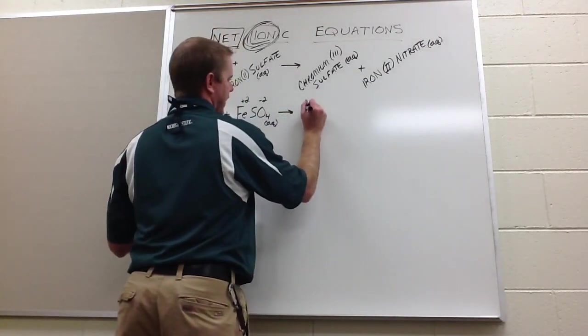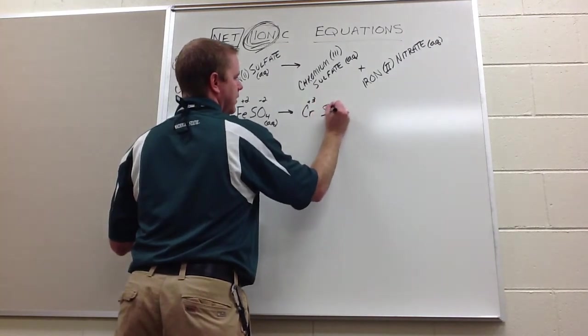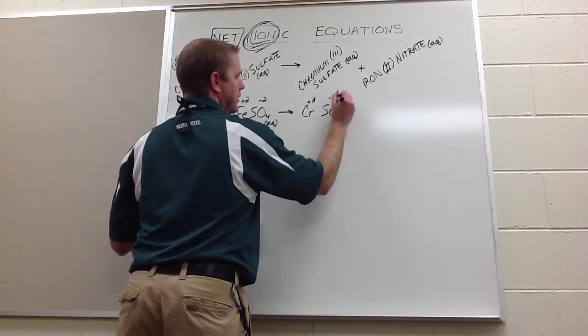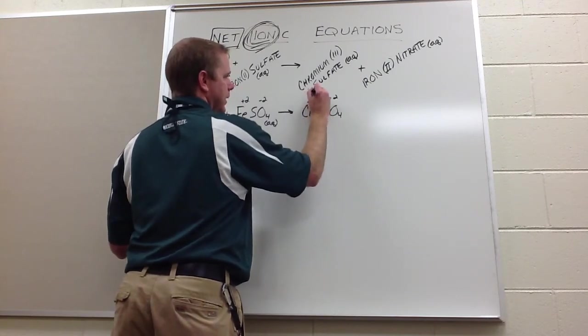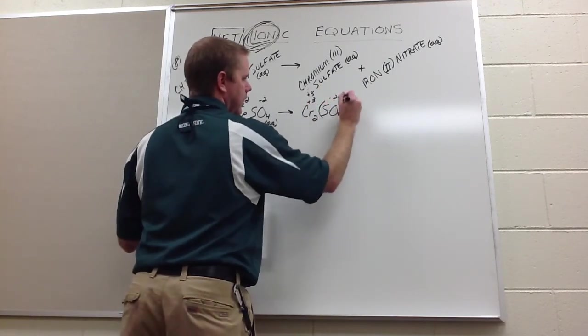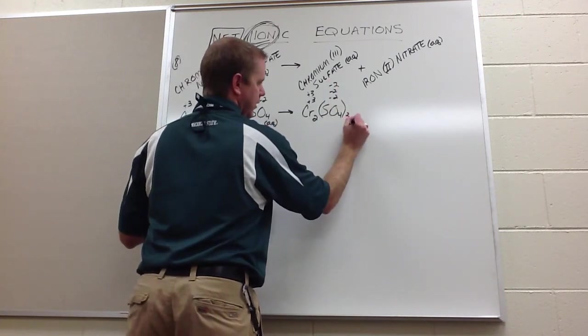Then chromium three sulfate, so we have Cr, it's plus three. Sulfate is SO4, it's still minus two. Therefore, it would take two positive three chromiums and three negative two sulfates. And it's still aqueous.